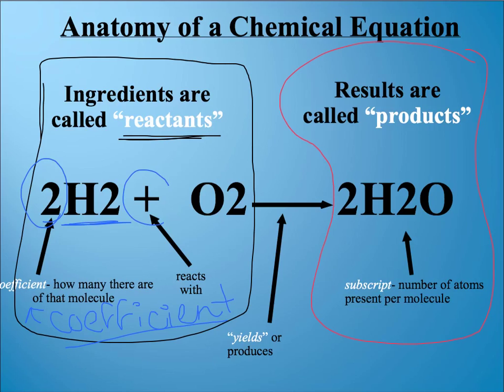Then there's a plus sign, so plus means that it's reacting with something else. So here this is saying there's two H2 molecules reacting with one O2 molecule. Because there's no coefficient here, we just assume that it's 1.